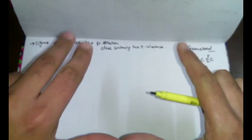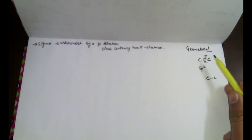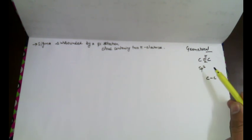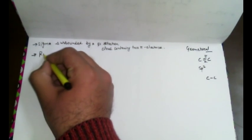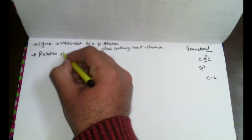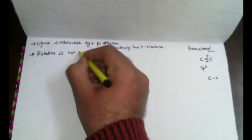For a single sigma bond (single bond) between carbon atoms, rotation is possible either clockwise or anti-clockwise. But since geometrical isomers have a double bond, when the double bond carbon atoms rotate it causes the breakdown of the pi electron cloud. So we can say rotation is not allowed — rotation is restricted. That is the second condition for geometrical isomers.